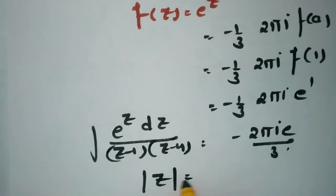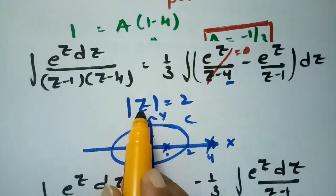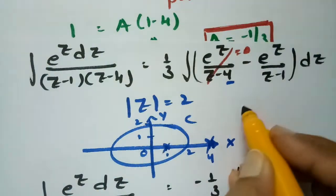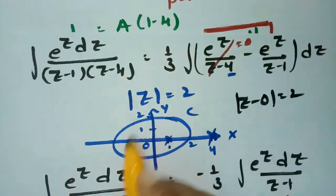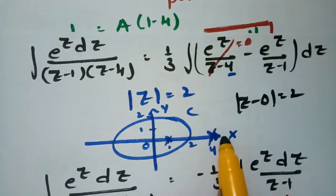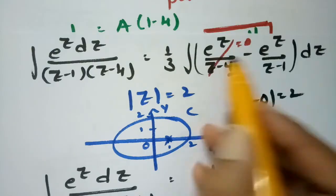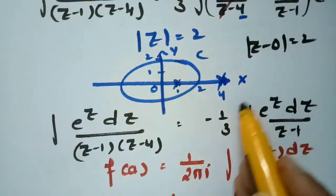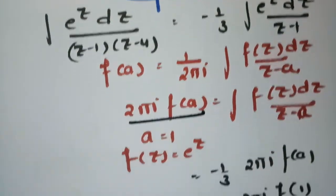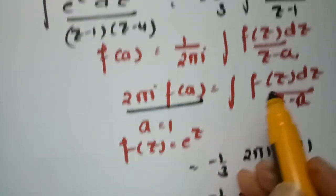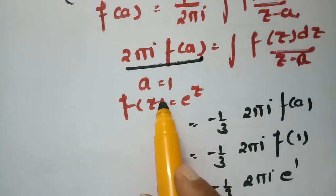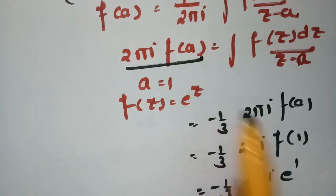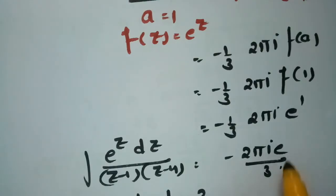So the final answer for ∫ e^z/[(z-1)(z-4)] dz where |z| = 2 is -2πie/3. Since |z| = 2 means center 0 with radius 2, point 4 is outside the contour so Cauchy's theorem does not apply there. The formula 2πi · f(a) is applied only for the integral with (z-1), giving f(1) = e^1 = e.